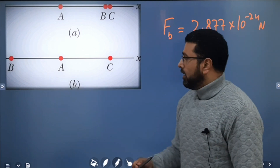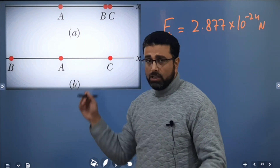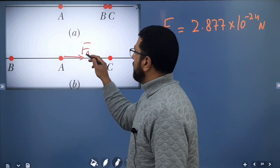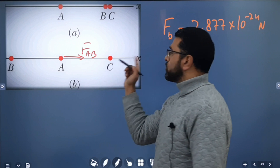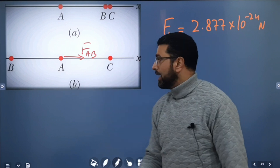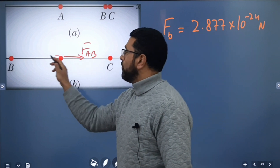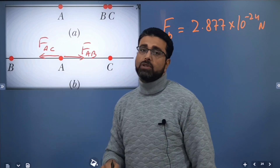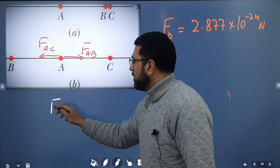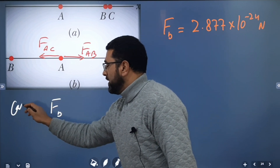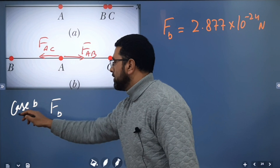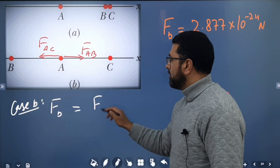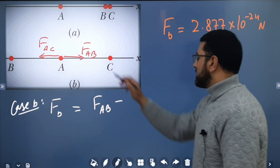In case B, all three are still positively charged, but B is now on the opposite side. B will repel A in the positive direction, so F_AB gets a positive sign. C still repels A in the negative direction. The net force in case B is: F_B = F_AB − F_AC.